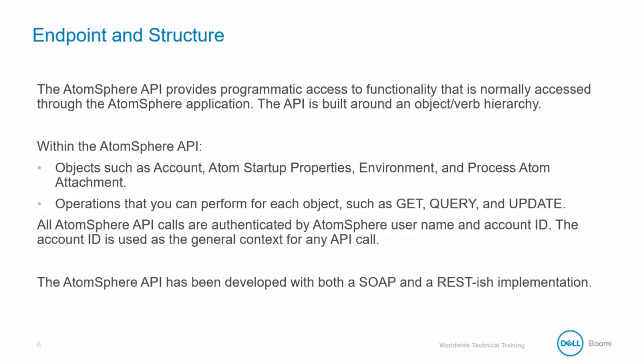Within the AtomSphere API you will find objects, and those objects have operations. The objects are things like account, Atom startup properties, environment, and process Atom attachment. The operations for these objects are things such as get, query, and update.